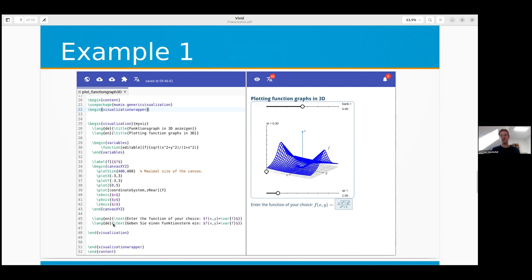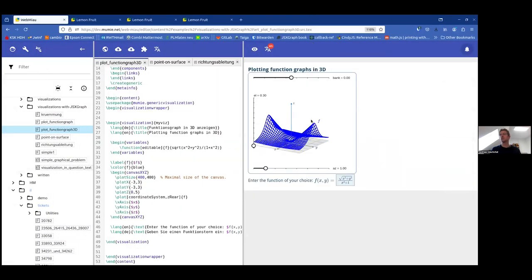Then you just define title, some variables. Here's just a function. For drawing the canvas, you have an environment called canvas XYZ in that case for the three-dimensional thing. You define the sizes, the ranges of your axes, add labels to the axes, and plot tells you what to plot. So the function f will be plotted with coordinate system and the z-plane rear. That's the screenshot and now you see it live.